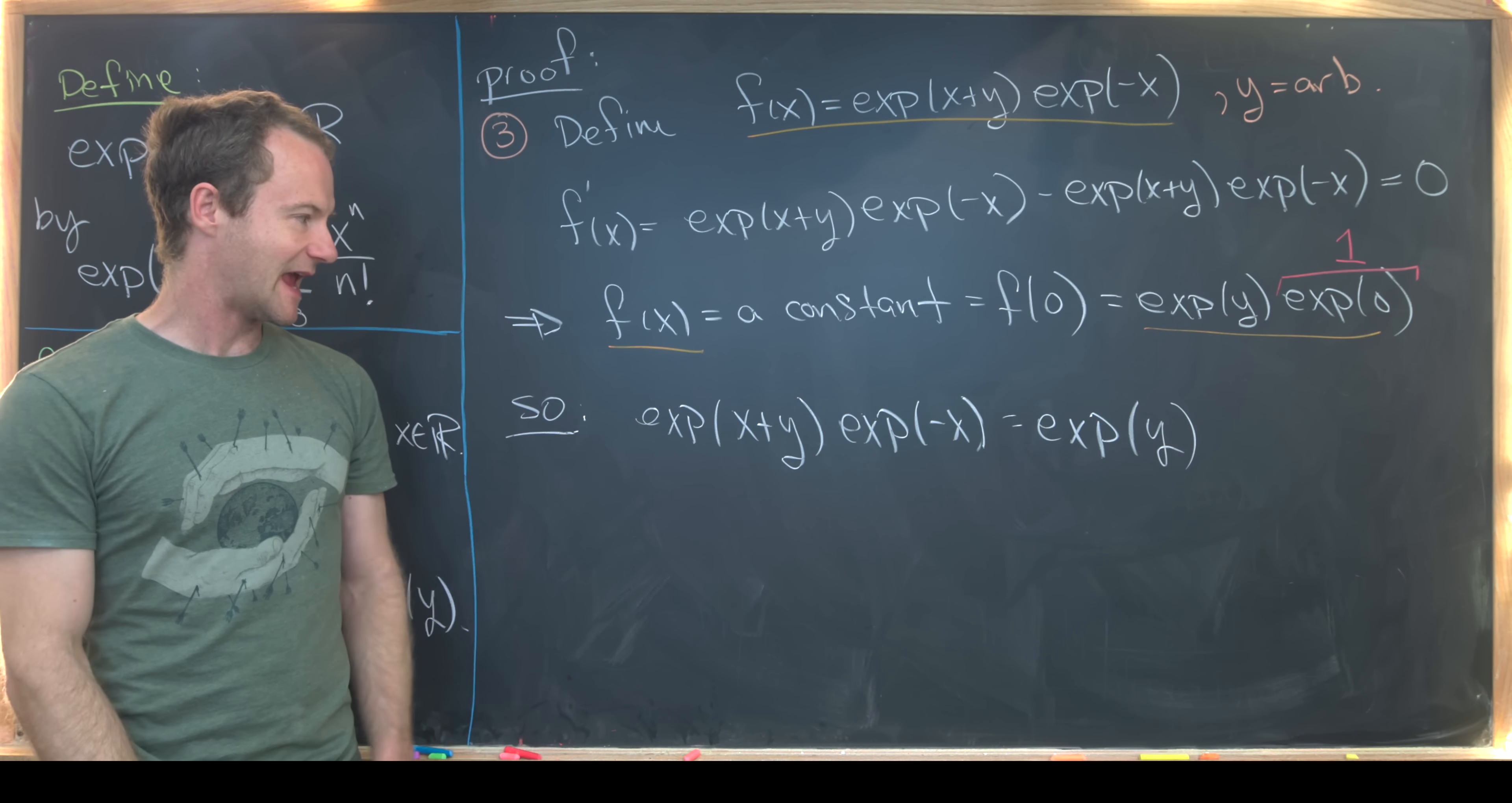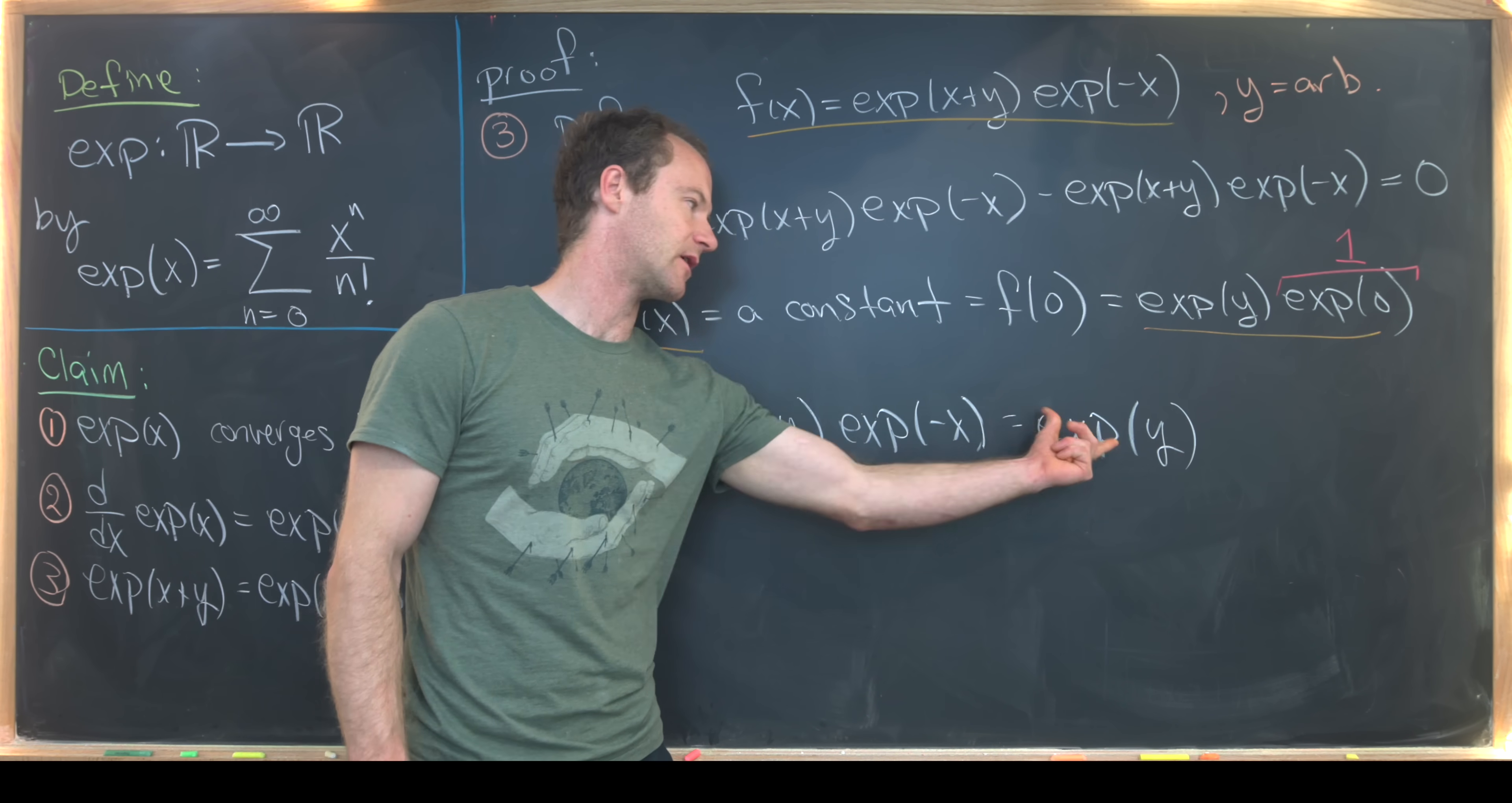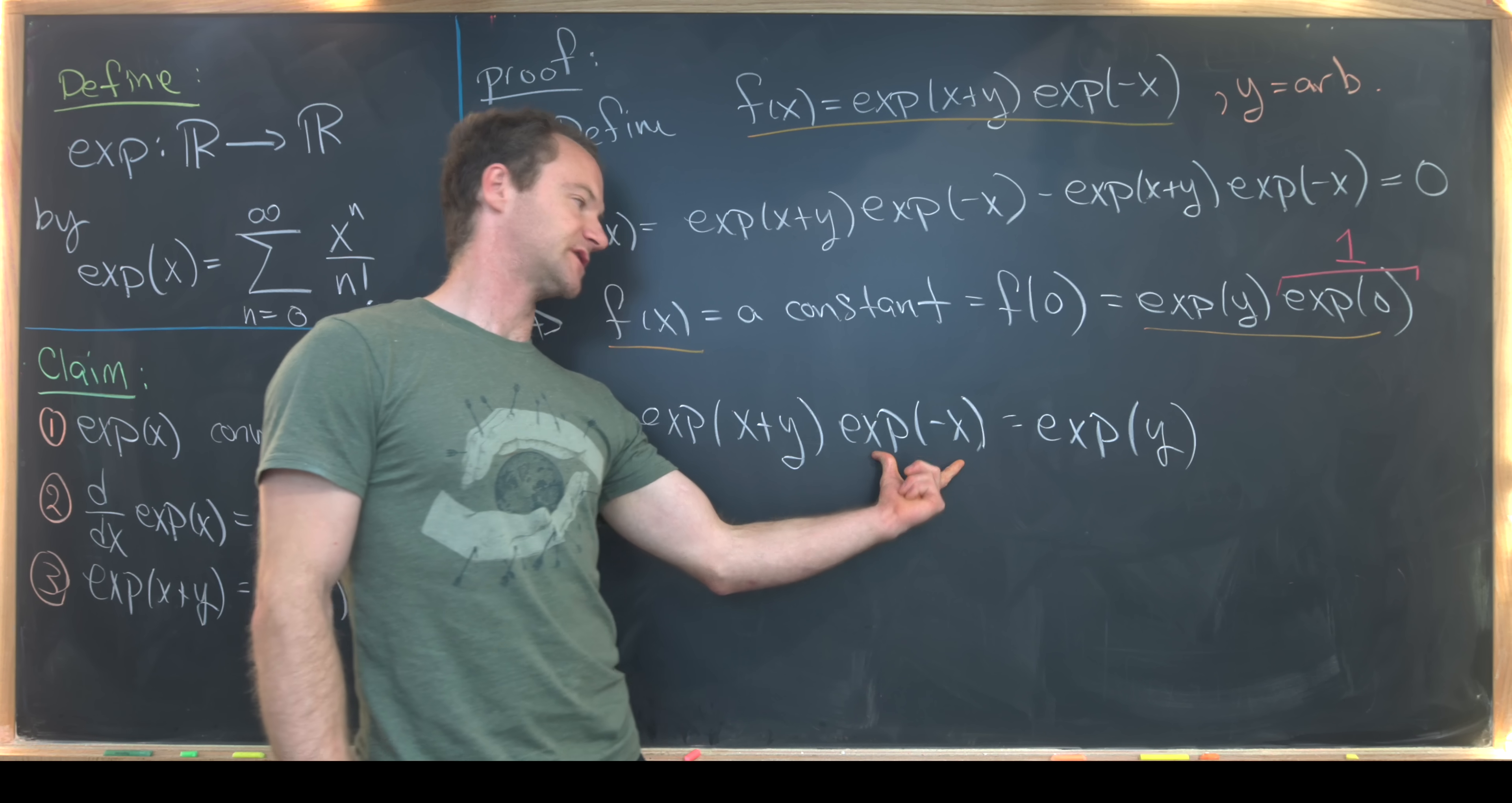And if you're a little bit hasty, you might think that we're done. We can just multiply by exp(x) to both sides of the equation. That'll cancel this one out and then multiply to the correct thing over there on the right hand side. But a priori, we don't know that the inverse of this, the multiplicative inverse is exp(-x) or exp(x).